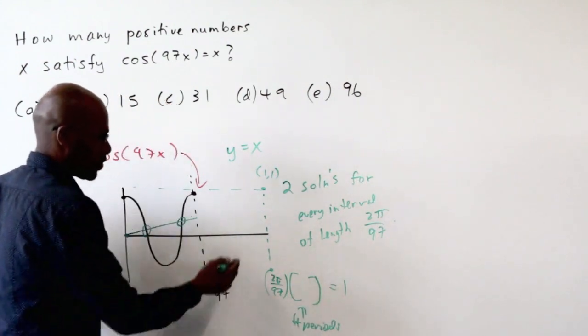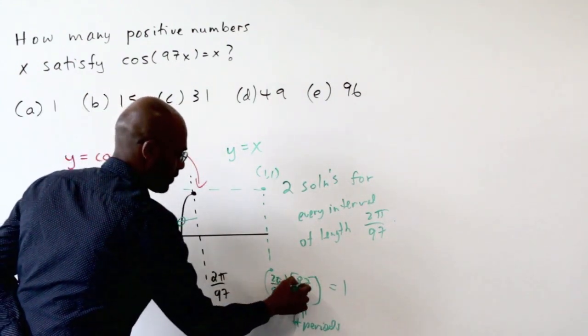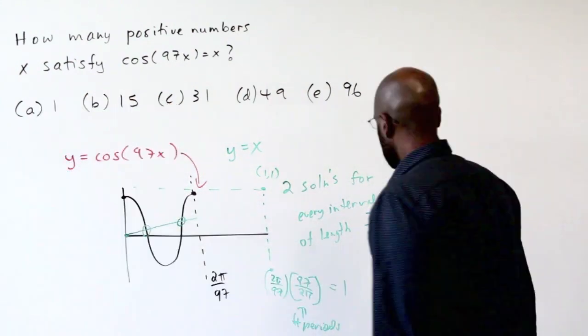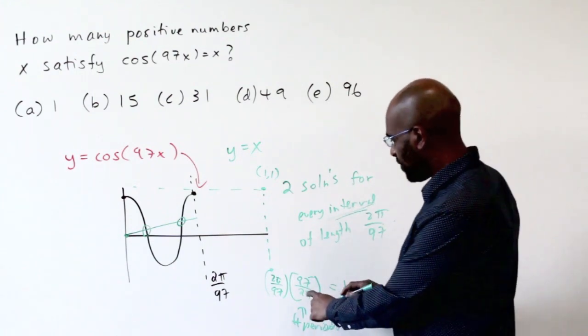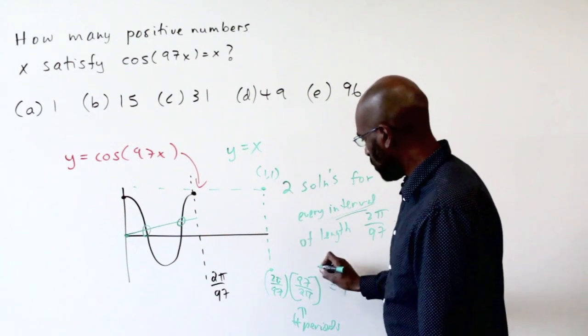We need the total here to be 1, so the number of periods is roughly 97 over 2pi. So we get two solutions for every interval. And the number of intervals we're going to have to get to this point 1, 1 is this.